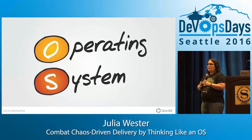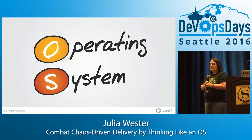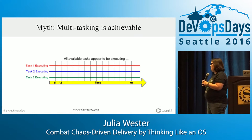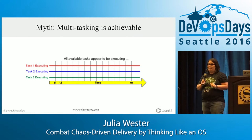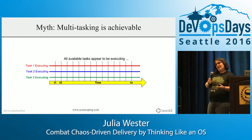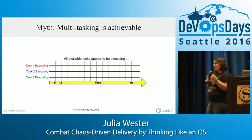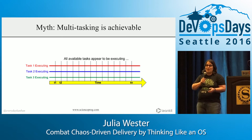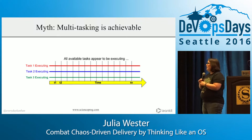Yet the OS manages to do it quite effectively, so I wanted to look at how it did that and see if there's anything we can apply to ourselves. But first, I want to talk about the fallacy of multitasking. From what I understand, an operating system can only process one job per core at a time, just like we can only have one thought at a time.